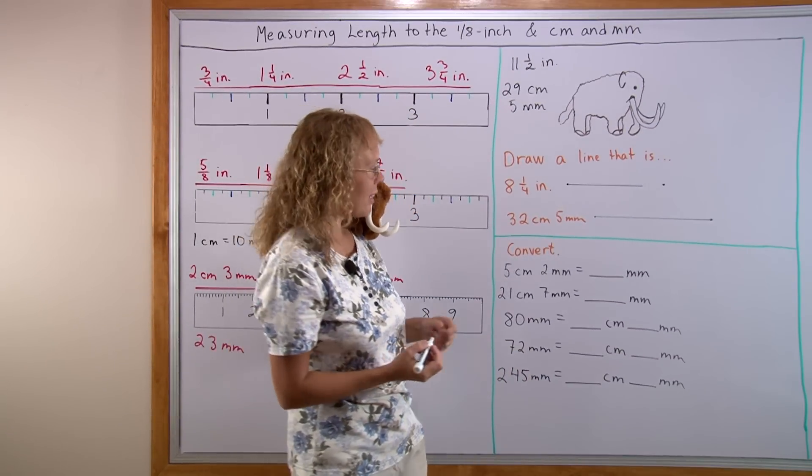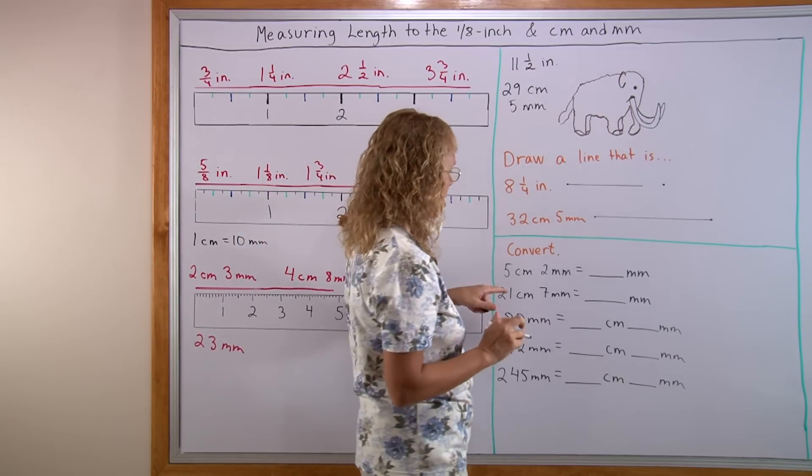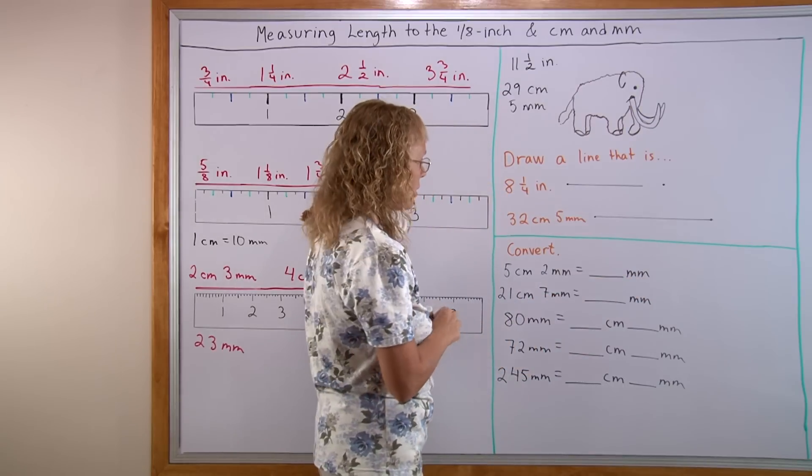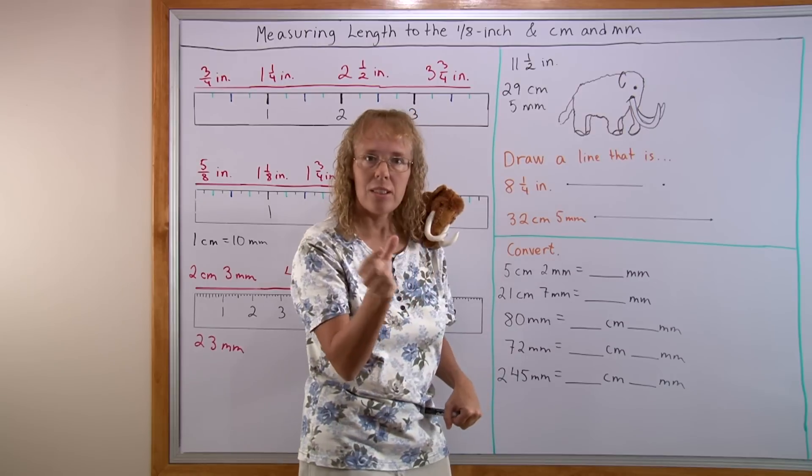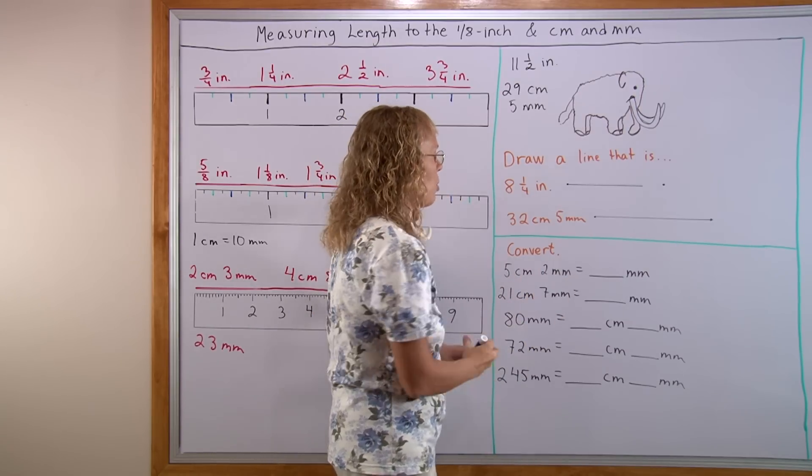And lastly, we will practice a little bit converting between centimeters and millimeters here. 5 centimeters, 2 millimeters. How many millimeters is it? Just simply remember that each centimeter is 10 millimeters. So here's 50 millimeters and two more. So 52.